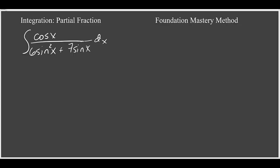Now what about this problem, where we're integrating cosine of x over 6 sine squared x plus 7 sine x? At first glance, it doesn't look like we could use integration by partial fractions, since we don't have a rational function.